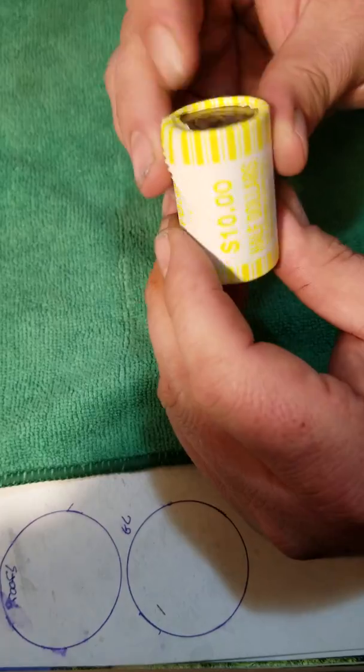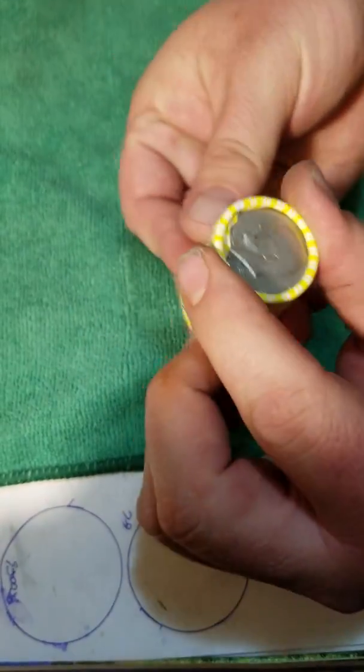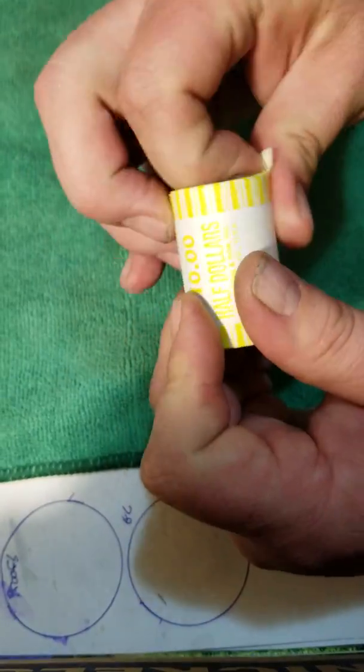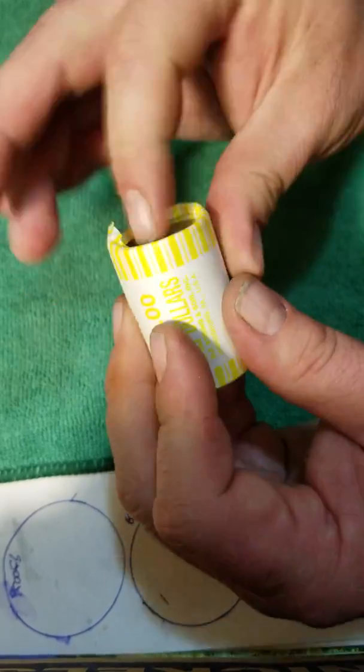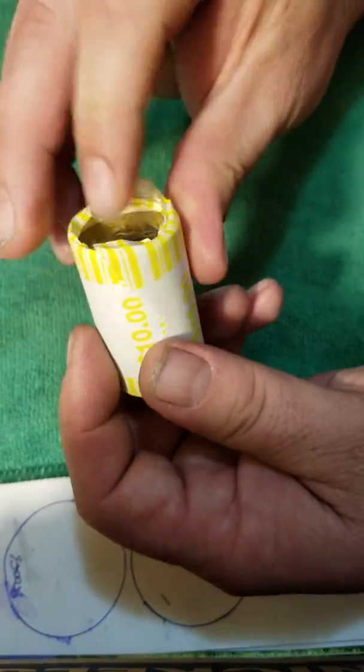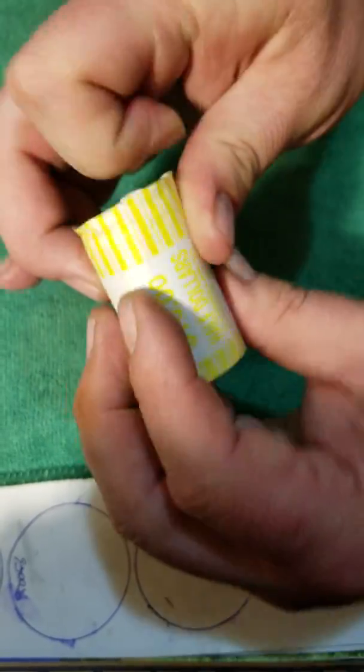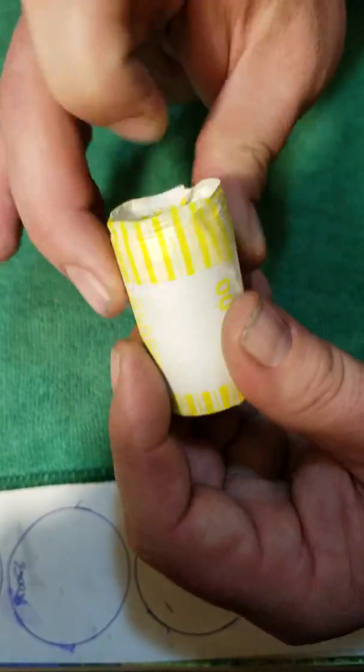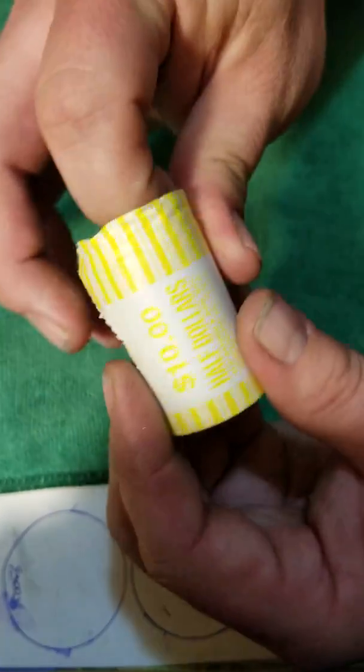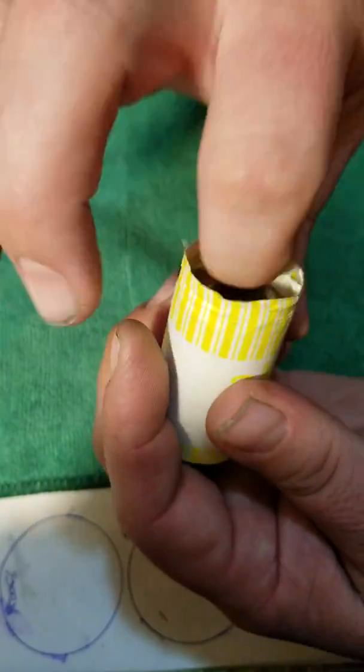All right guys, roll number seven. And just let you guys know, I will go back through all these rolls and I'll check them for no FGs and I'll check them for NIFCs, and anything that might be nicer than what I have saved for myself. But for the purpose of the video, we're just going to continue on searching for silver.